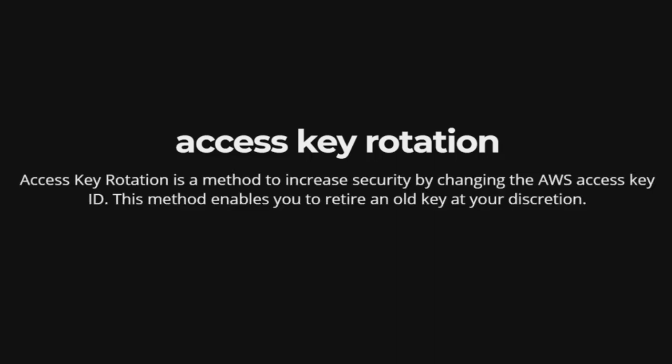Access Key Rotation. Access Key Rotation is a method to increase security by changing the AWS access key ID. This method enables you to retire an old key at your discretion.